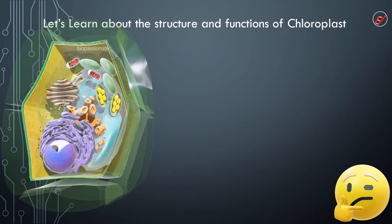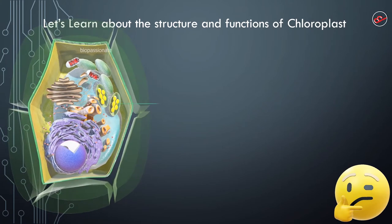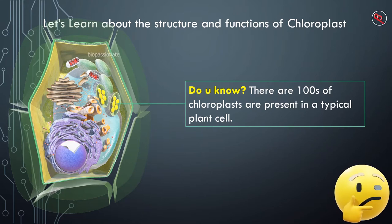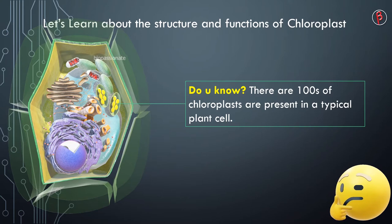In a typical plant cell, especially in higher plants, there are about hundreds of chloroplasts present. The number of chloroplasts may vary from species to species, from algae to angiosperms.